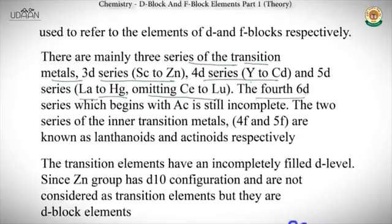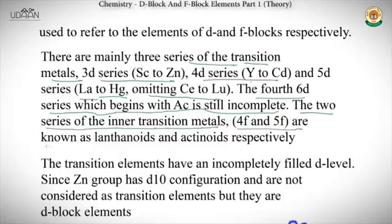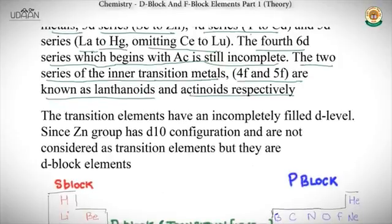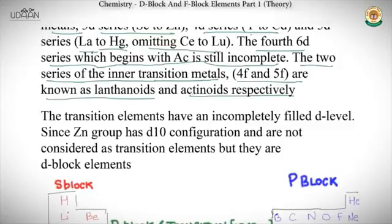The fourth 6d series begins with Ac and is still incomplete. The two series of inner transition metals, 4f and 5f, are known as lanthanoids and actinoids respectively. The transition elements have an incompletely filled d level. Since the Zn group has a d10 configuration, it is not considered a transition element, though it is a d block element — because d has a completely filled d orbital.